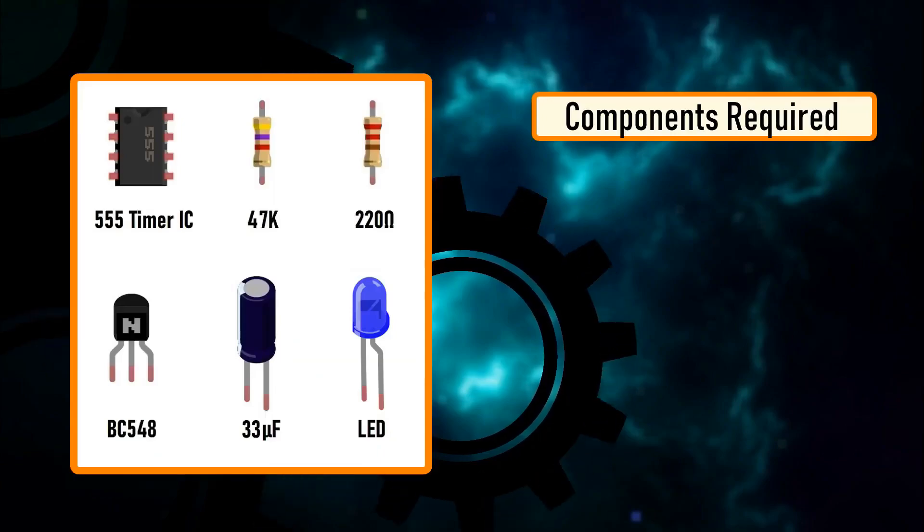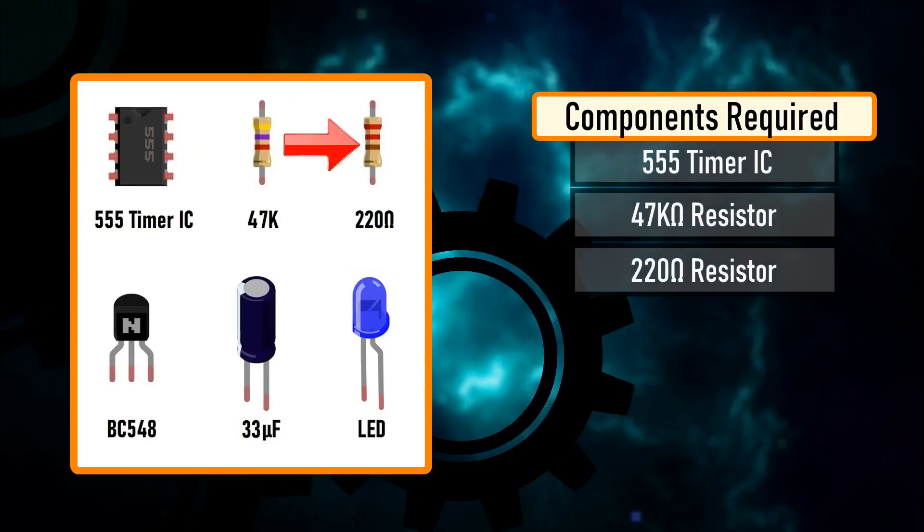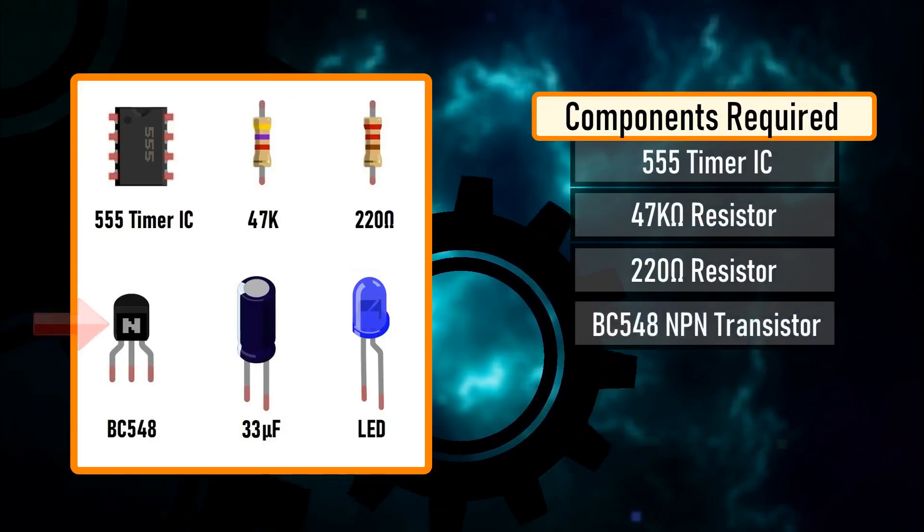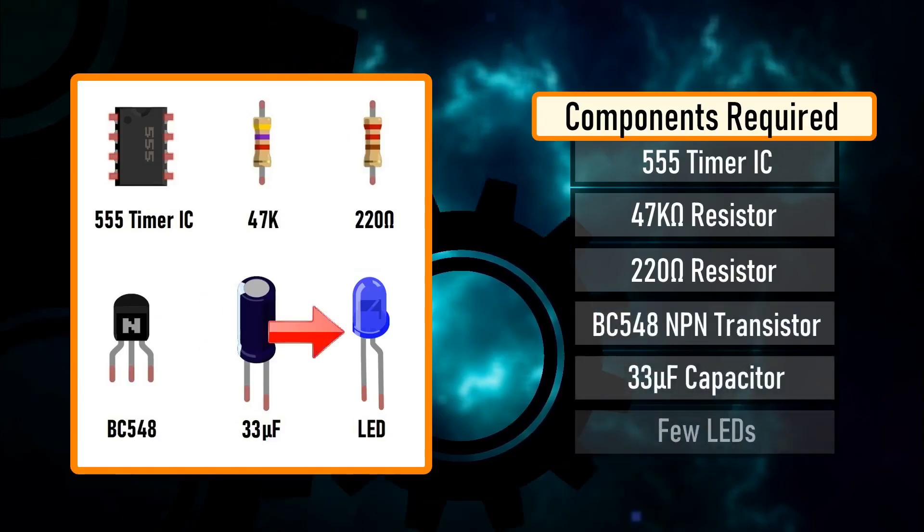For this tutorial, you need one 555 timer IC, one 47 kilo-ohm resistor, one 220 ohm resistor, one BC548 NPN transistor, one 33 microfarad capacitor and few blue LEDs.